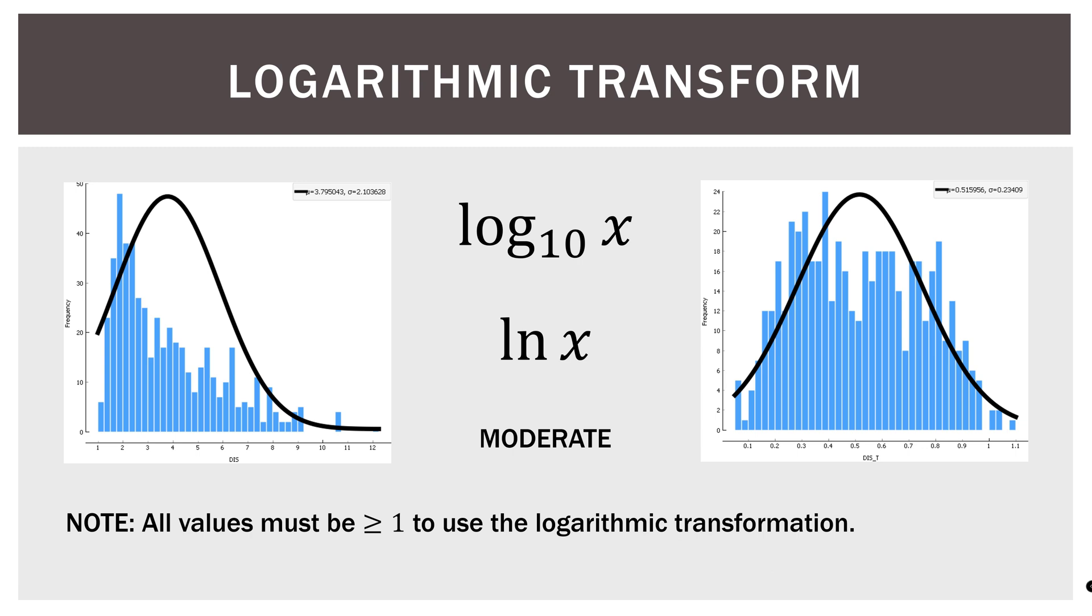Now a note here as well. So all values must be greater than or equal to one to use the logarithmic transformation. So I had to do a little bit of math here as well. So all we did was make sure the lowest value was one, then we took the logarithm. If we do not, we'll end up with negative values. So mathematically, we usually add a constant to our data set, so that the smallest value is one.